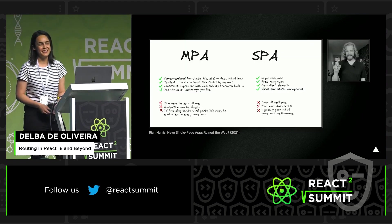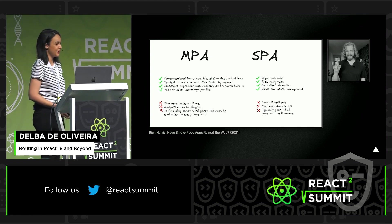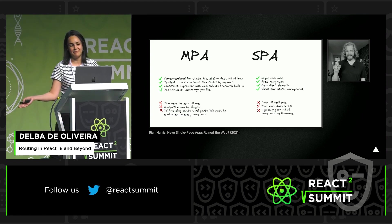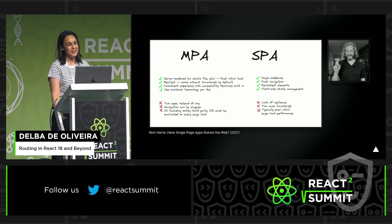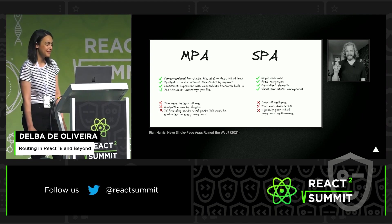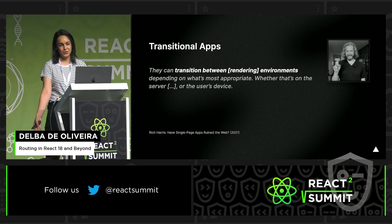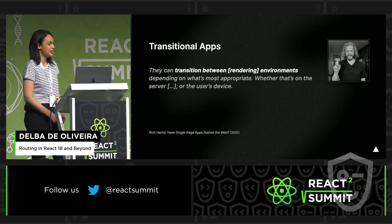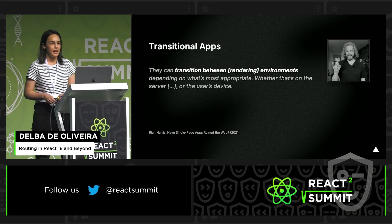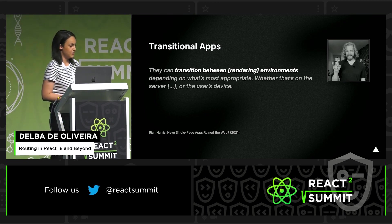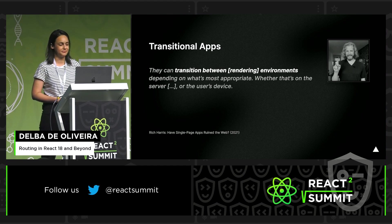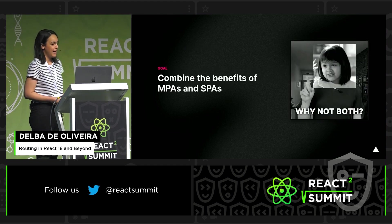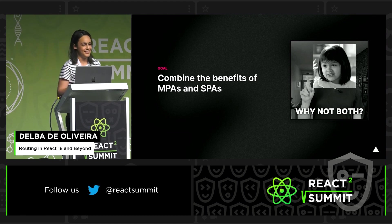Last year, Rich Harris, the creator of Svelte, gave an amazing talk on the whole MPA versus SPA debate, where he discussed some of the pros and cons of each. One takeaway I want you to remember is that he recognized there's an emerging pattern in our industry where applications are transitioning between different environments — client or server. He called those type of applications transitional apps. And transitional apps try to combine the benefits of both the client and the server, because why not both?